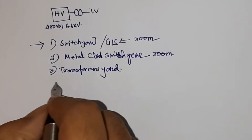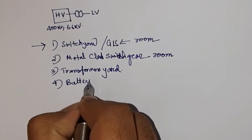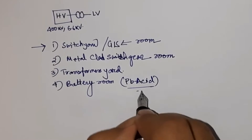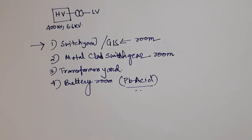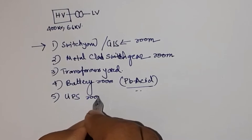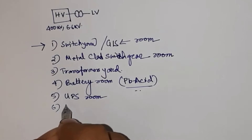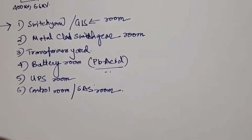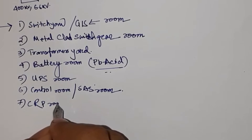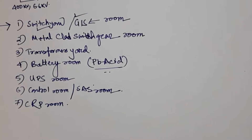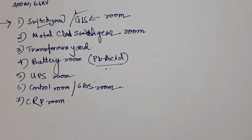Inside the substation building there shall be a battery room for housing batteries. This is mainly required for lead-acid batteries. If it is a valve-regulated lead-acid (VRLA) or sealed maintenance-free battery, then a separate battery room is not required. There shall also be a UPS room. Then there shall be a control room or substation automation system room, and a CRP (Control Relay Panel) room. The CRP room is required because relays cannot be installed outdoors in a switchyard, or inside a GIS, so a separate control relay panel must be installed.